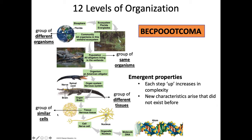Nervous tissue is a group of similar cells that come together to form tissue. This nervous tissue can be made up of neurons, astrocytes, and microglial cells — these are all similar cells that come together. Notice how as you increase in level, the complexity increases. These tissues come together to form what's called an organ, and in our example we have the brain.